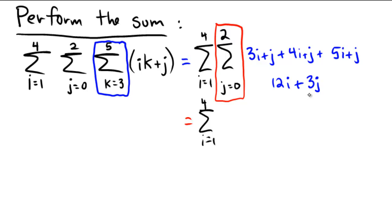So if j equals 0, we would have 12i in this expression. If I were to substitute j for 1, we would end up getting 12i plus 3. 12i plus 3, and then substituting j for 2, we get 12i plus 6.